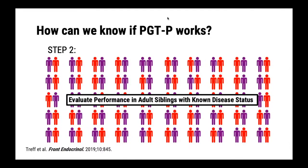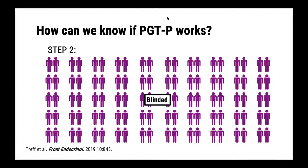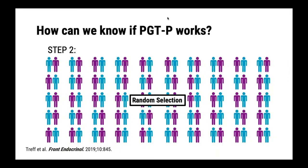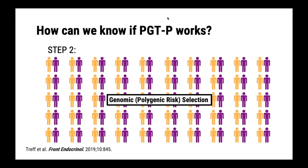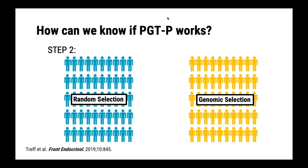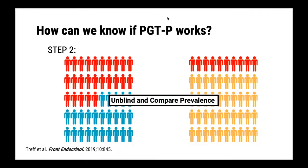The second step is to evaluate performance in adult siblings with known disease status. First, we blind the individual's phenotype — their disease status. You then perform random selection of one of the siblings, and also perform genomic or polygenic risk-based selection of one of the siblings. After we've conducted both sets of selection, you can unblind the phenotypes and compare the two groups for prevalence of disease.